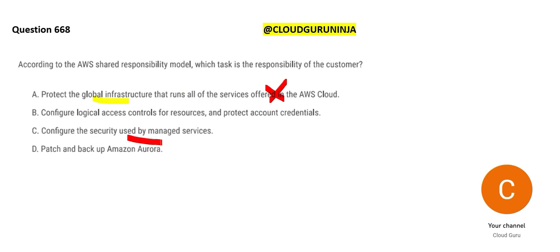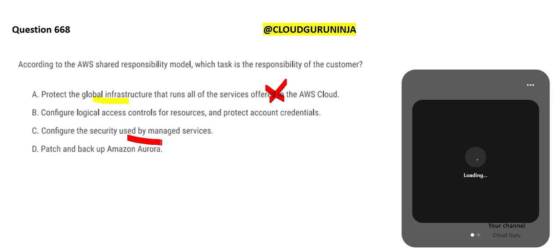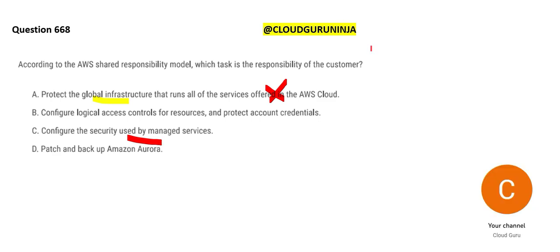Configure the security used by managed services — managed services are like ordering food from a restaurant. How the food was cooked, how many kilos of potato or onion were used — you don't know. That is managed services. Configuring security is similar: it's a restaurant, you don't know what goes in, you don't know how hygienic it is — that is AWS's responsibility.